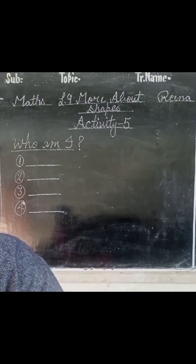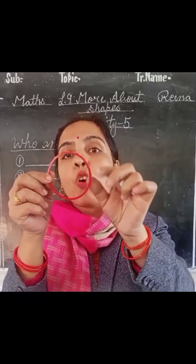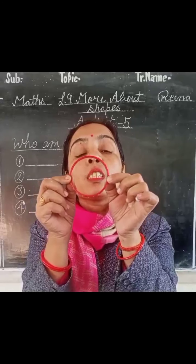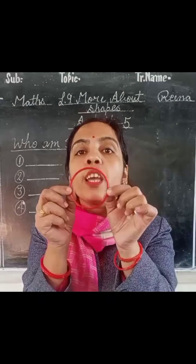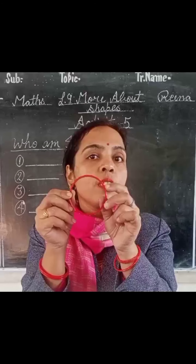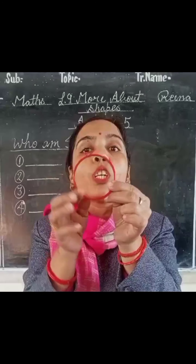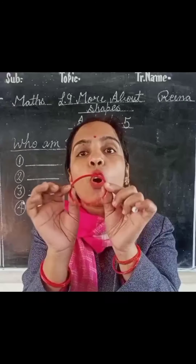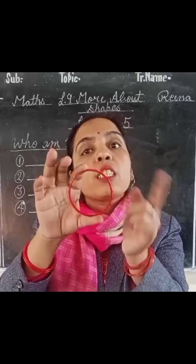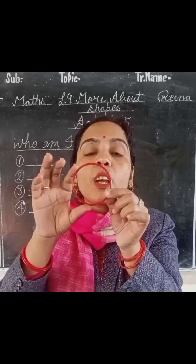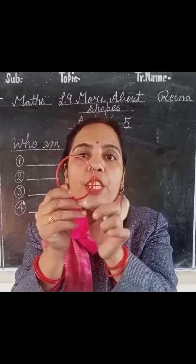Now the next plane shape is a circle. I have a bangle here — the shape of the bangle is a circular shape. In a circle, how many corners or vertices? No corners — that means zero corners, because the shape of a circle is completely round and curved. There are no corners at all, so the corner count is zero. And a circle has only one curved face.